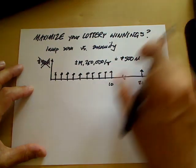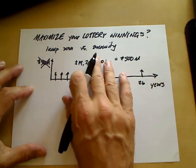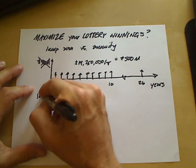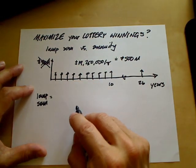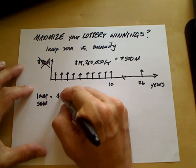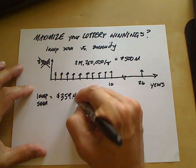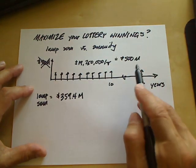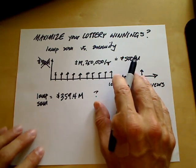They take your jackpot, spread it out over 26 years, and say congratulations, you're a winner. But if you want the lump sum — and according to lottery officials quoted in a recent article, most people take the lump sum — they only offer you $359.4 million, not $500 million. What's going on? Why can't you have the $500 million all at once?